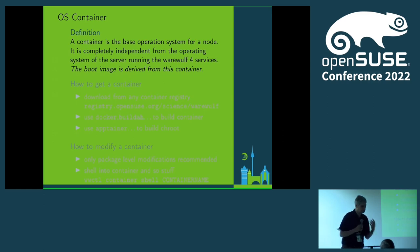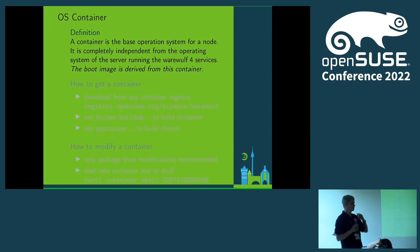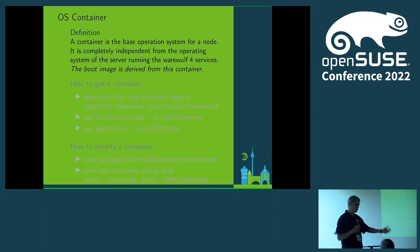The container is the operating system — not a real application container. The operating system comes in a container, so you download an OCI container from the internet and then you can immediately deploy that container to the nodes. For example, you can get the Leap container, download it, deploy it to the node, and you have a running Leap system. Or if you want to test a new kernel, download the Tumbleweed container, boot it, deploy it to the nodes, and you're done. The boot image is derived from this container.